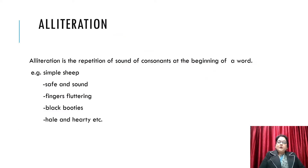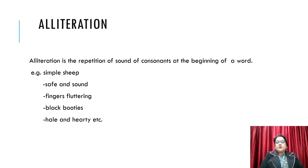As we all know, there are 26 letters in English. Five are vowels: A, E, I, O, U. These are called vowels, and the rest of the letters are called consonants. So there are five vowels and 21 consonants.